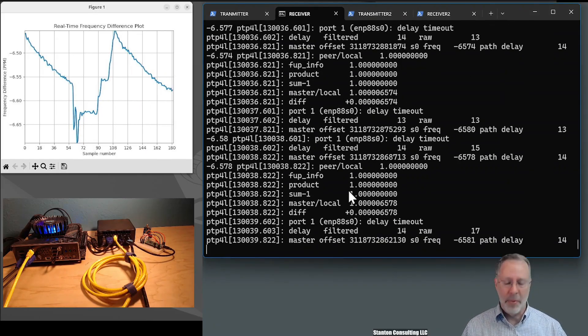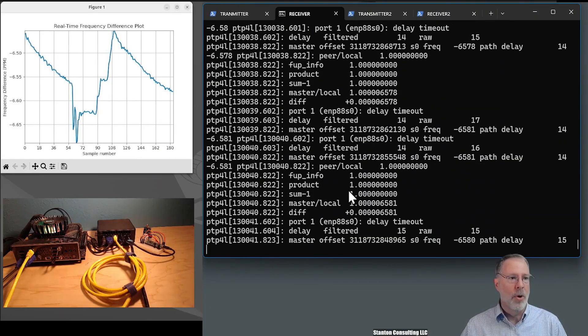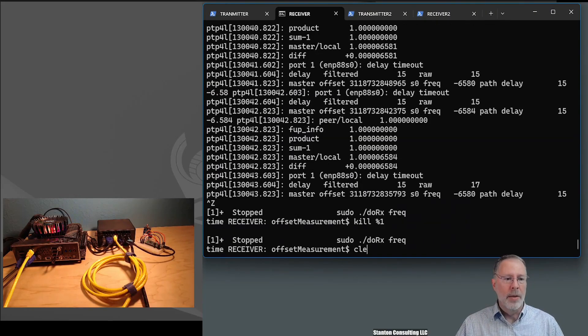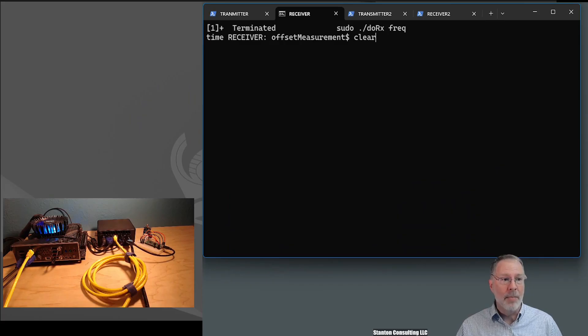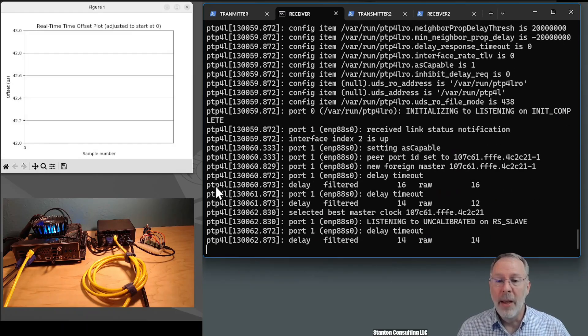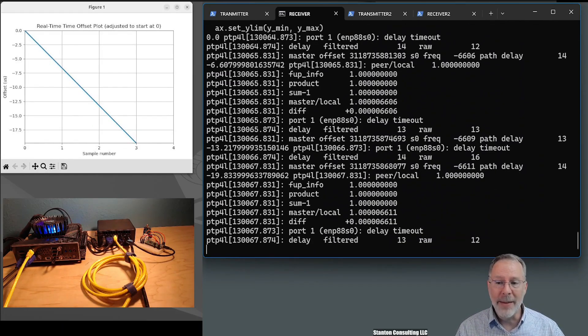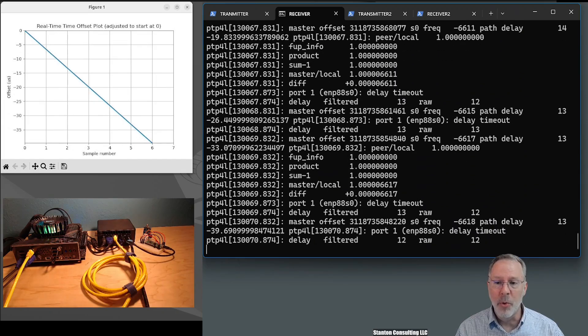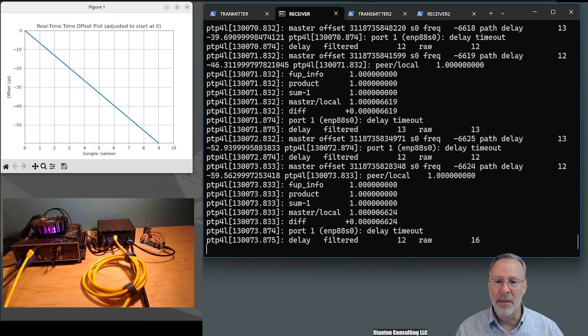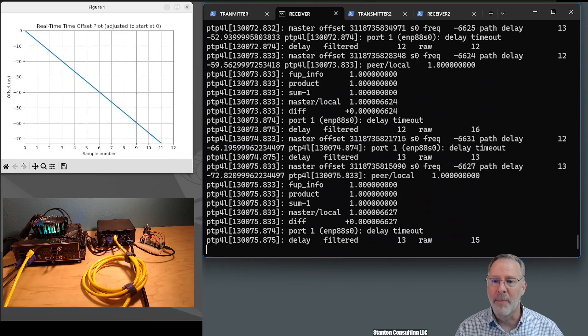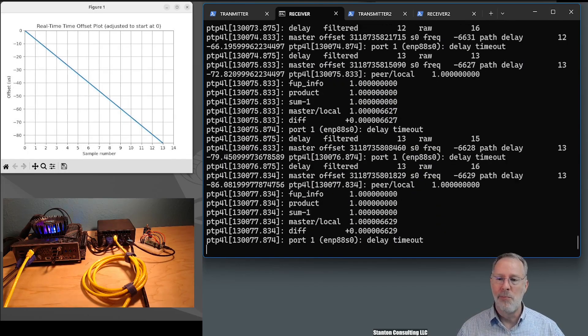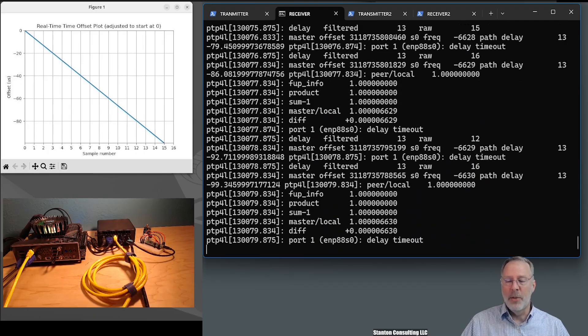So let's stop the PTP4L on the receiver and let's run it again but plotting the offset. Now we're going to look at the actual offset from which those frequencies were just computed. And if we look carefully and we watch for 10 seconds, we would expect that the offset will be about 65 nanoseconds. 9, 10 seconds, yeah, about 60 nanoseconds, 65, which makes perfect sense.